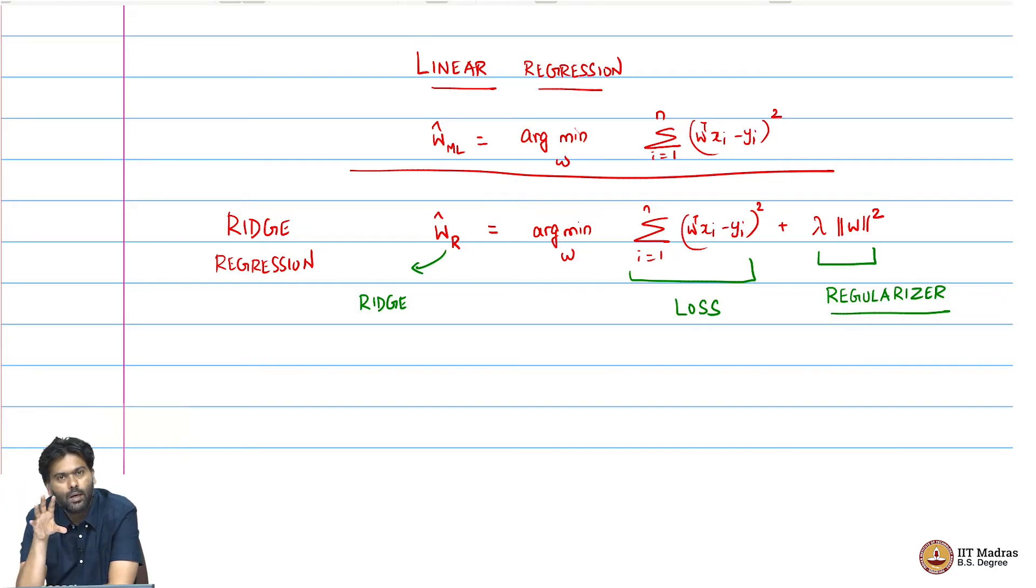If a linear combination of these features is going to represent our label y, and you have redundant features, then there might be multiple linear combinations which might explain our y label. Now we are saying pick that linear combination, pick those set of weights that have as small length as possible, which means you don't pick multiple redundant features.